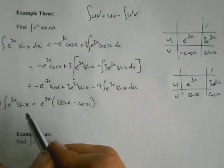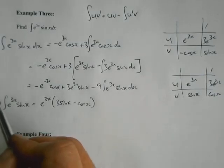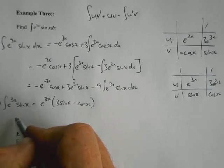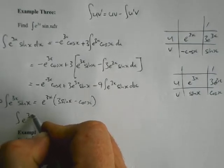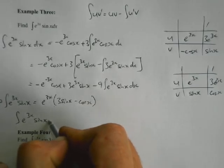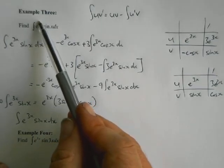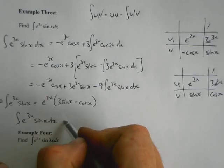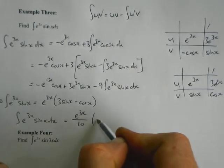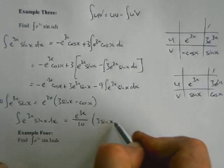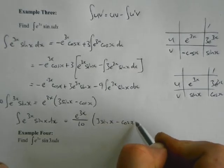So if I add that onto that side, I'm going to end up with 10 lots of the thing I'm looking for, e to the 3x sine x, equals this lot here which I'm going to take an e to the 3x out the front of it. And I'm going to write it with a positive term first, so 3 sine x minus cos x.